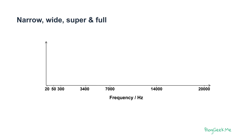Within that range of 20 to 20,000, we call it narrow, wide, super, and full band of hearing ranges. And yes, there are people that can hear a bit more in these regions, and those that can hear a lot less.